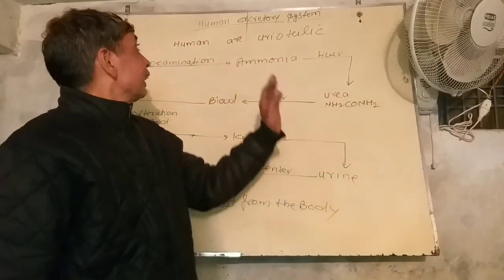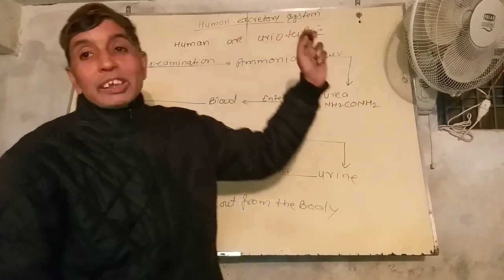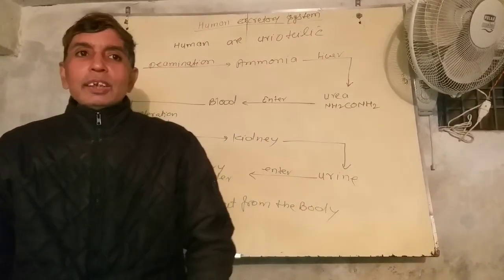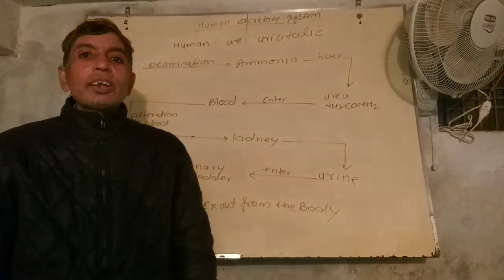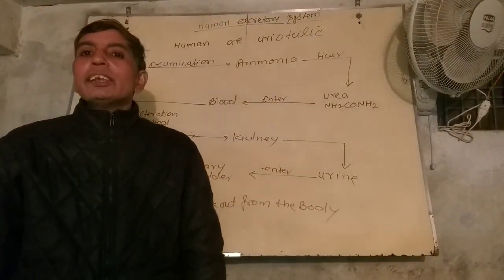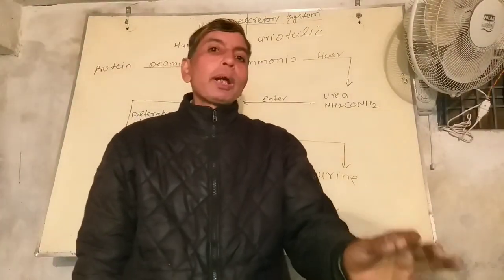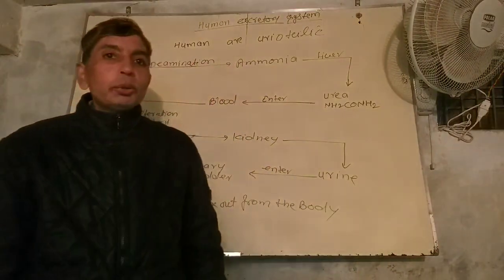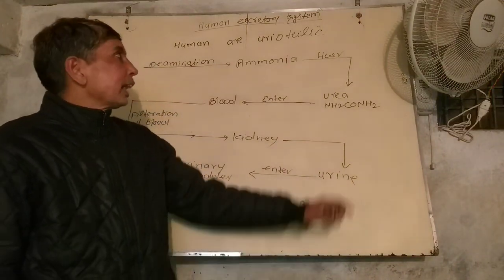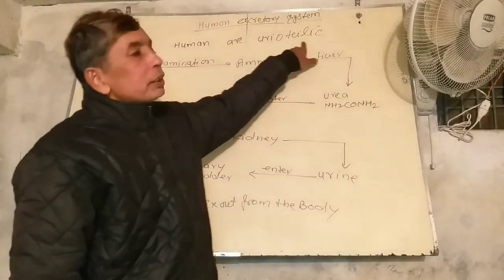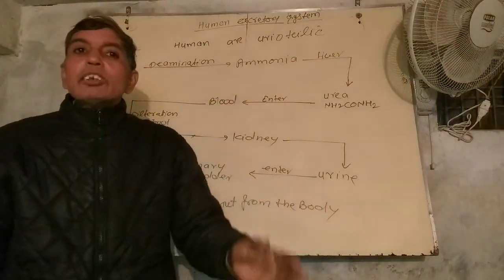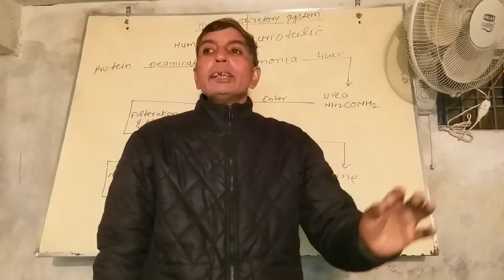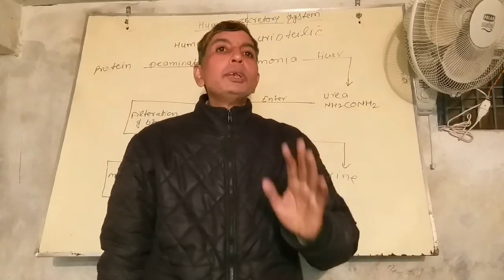The topic we study here is the human excretory system. The excretory system is the removal of waste material from the human body. Humans are ureotelic, meaning they excrete their waste material in the form of urea.